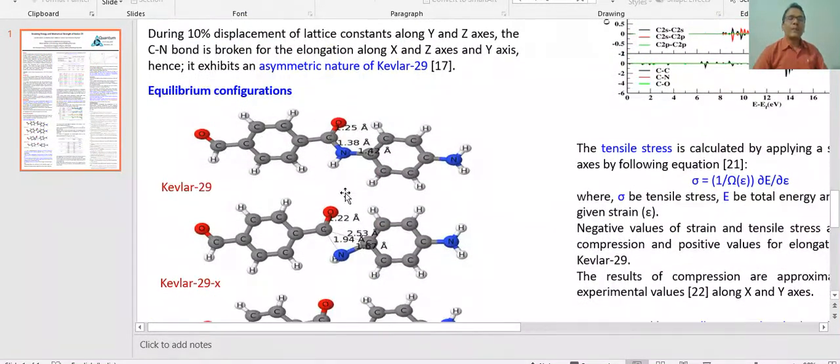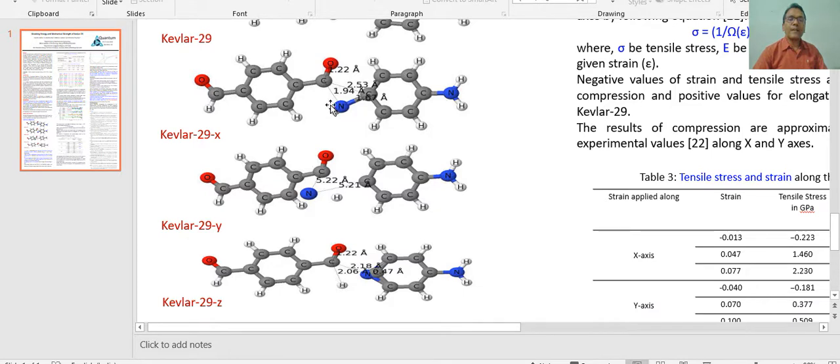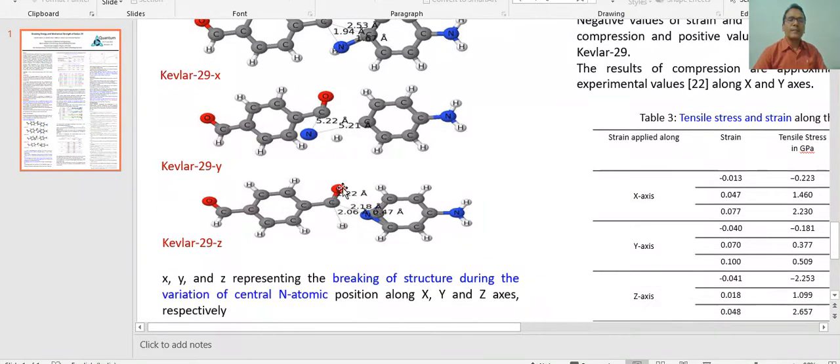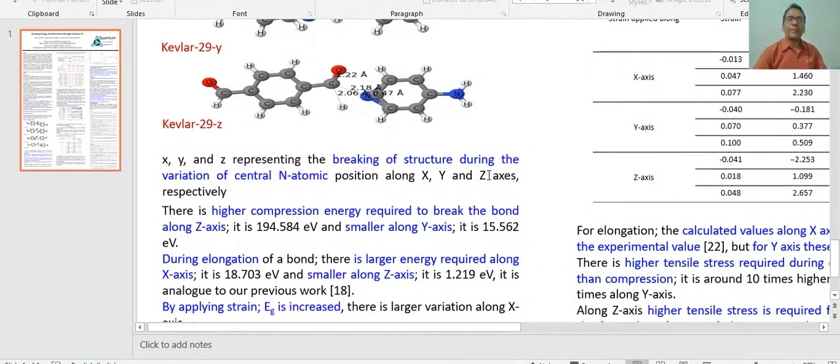This is the equilibrium configuration of this material. The central nitrogen is shown here and the bond length is measured from Molden: this is 1.25 angstrom, this is 1.3 angstrom, and this is 1.4 angstrom, and this is comparable to experimental bond length. Other three pictures are also here. In this case, the central nitrogen atom is displaced along X-axis, along positive and negative X-axis. This is along positive and negative Y-axis, and this is along its length, obviously along Z-axis. So this X-axis represents the breaking of structure during the variation of the central atom N positioning along X-axis respectively.